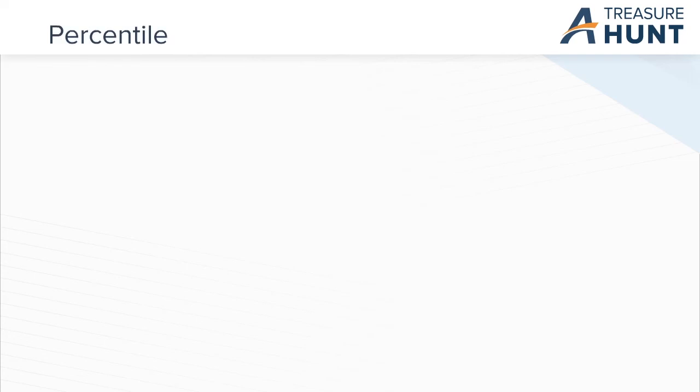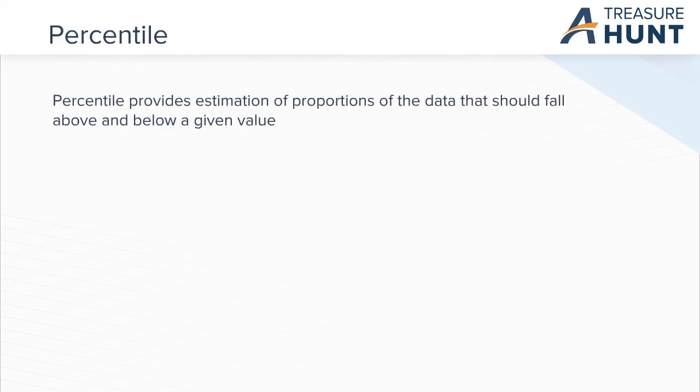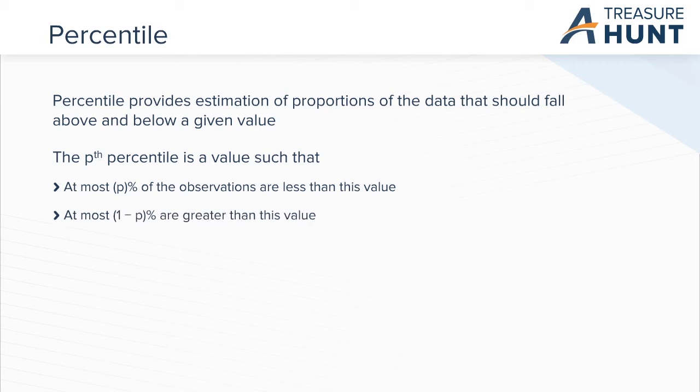The final measure is percentile. Percentile provides an estimation of the proportion of a data set that falls above and below a given value. In other words, it is a value such that at most, p percent of the observations are less than this given value, and that at most, 1 minus p percent are greater than the given value in a sorted data set.